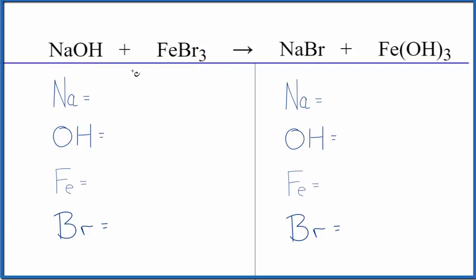So if we look at the type of reaction first here, we have sodium and iron, and they're switching places. We have sodium hydroxide, but we end up with sodium bromide. Start with iron bromide, we end up with iron hydroxide. So this is a double displacement reaction.